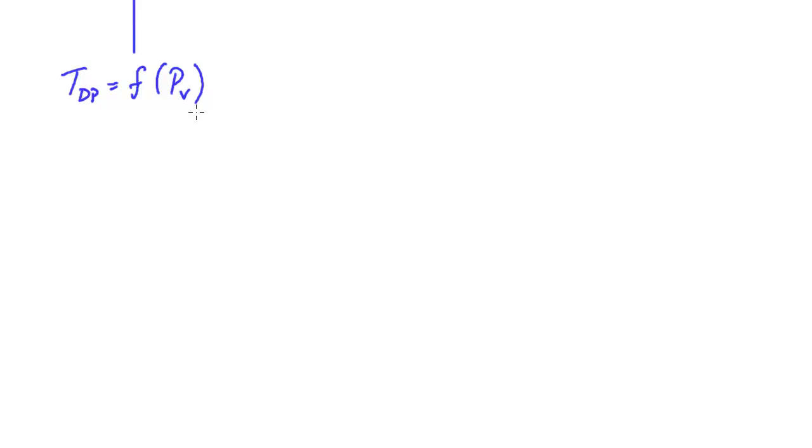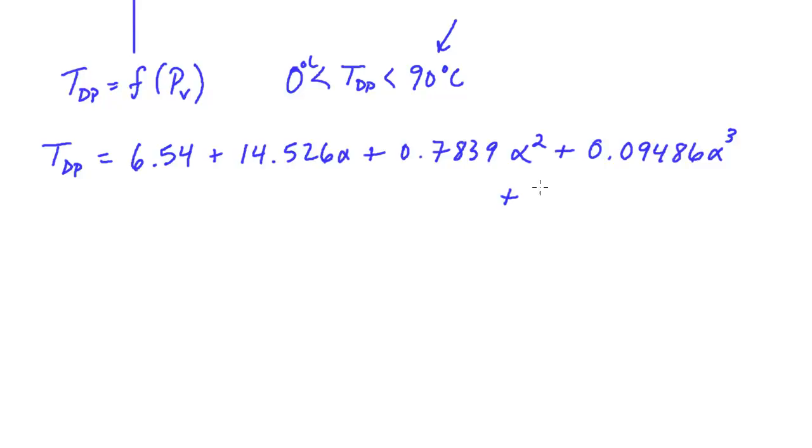And it's going to be a polynomial equation with a natural log in it, so I'm going to write it out quickly. So basically, for the range of zero dew point is less than 90 degrees C, this would be an unlivable condition. So basically any condition above zero degrees C that we'll see. This is the formula that you need to calculate dew point in SI units.